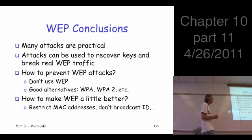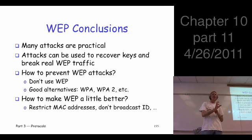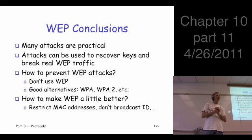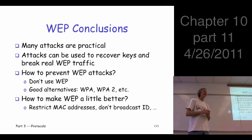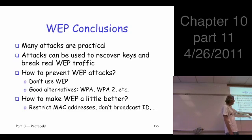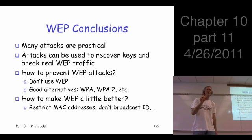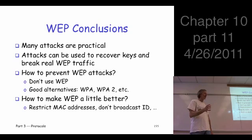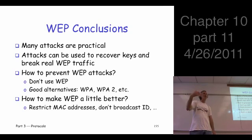Suppose you're stuck with WEP — what can you do to make it somewhat more secure? You can configure the access point to only accept packets with certain MAC addresses. Is that good? Well, it's easy to spoof a MAC address, but at least an attacker has to figure out a valid one, so there's a little bit of work involved. Another thing you can do: the access point's SSID is broadcast by default. You can configure it to not broadcast that information, so it acts like a password — you have to know the access point name ahead of time.